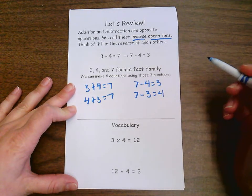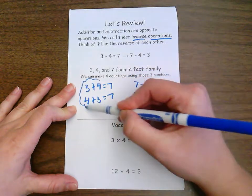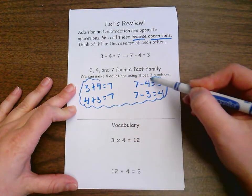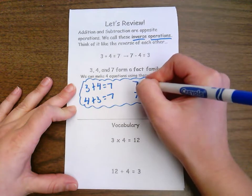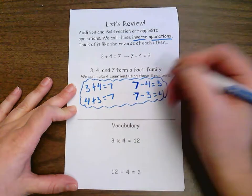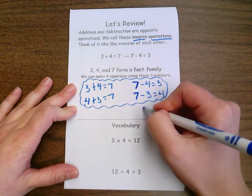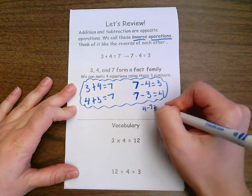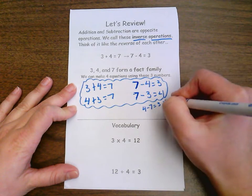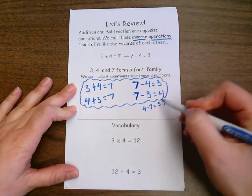One thing we want to make sure that we're careful of is that when we're doing our subtraction, we want to make sure our total is always our first number. So something like four take away seven equals three is something that is not true. It doesn't work out that way.